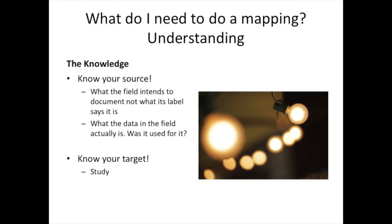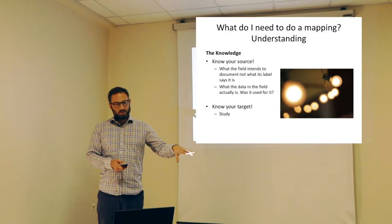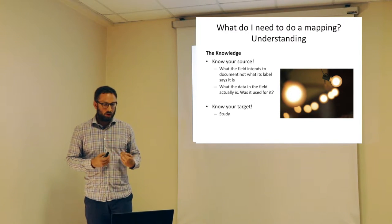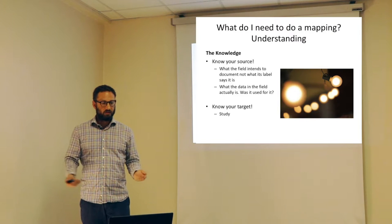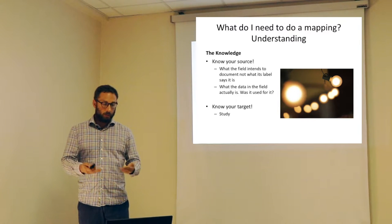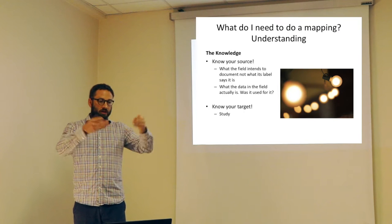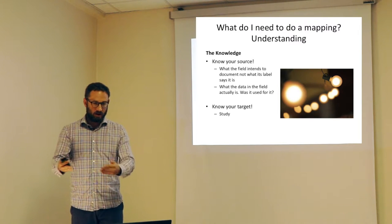What do you need in order to do a mapping? The first thing you need is an understanding of two things. On one hand, you need to know your own data — the data you're going to translate. You need to look at your data structure, whether it's an Excel spreadsheet, relational database, or an XML document, and understand what each field was intended to do. You have to treat this information source as if it's making statements about the world: what kinds of things does this document talk about, and what does each particular field say about that kind of thing?